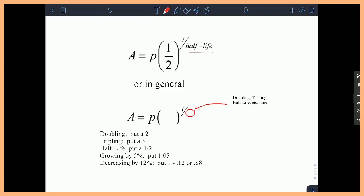In general, you can kind of memorize this format, where A is equal to P, and then in parentheses is what's happening. So like if it's doubling or tripling, you'd put a 2 here. Or a 3 if it's tripling or whatever. And then T divided by the bottom is the time it takes to double or triple or half, or whatever it's doing.